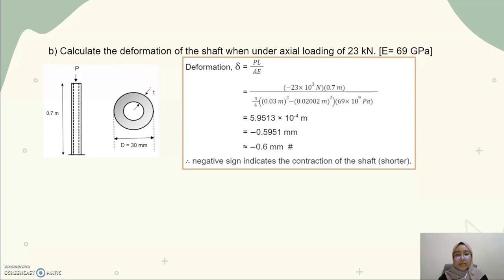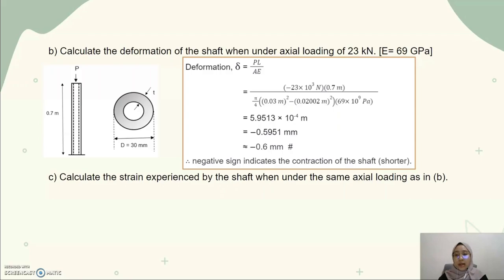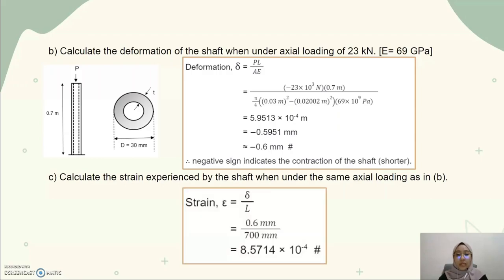Here we can notice the presence of the negative sign. It indicates that the shaft becomes shorter, or it contracts, when it is under the axial loading of 23 kN. For question 1C, we calculate the axial strain experienced by the shaft under the same loading of 23 kN. By using the equation: strain equals deformation divided by the length of the shaft, we substitute the deformation of 0.5951 mm and the length of the shaft, which is 700 mm.